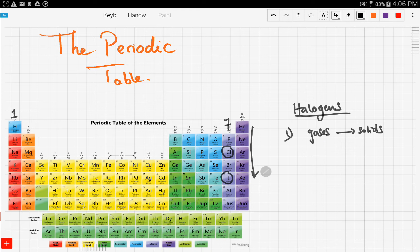Halogens change from gases to solids. Now the next thing is that halogens are usually colored gases, and they exist in a diatomic form, so they're also diatomic. For example, chlorine exists as Cl2, fluorine exists as F2.